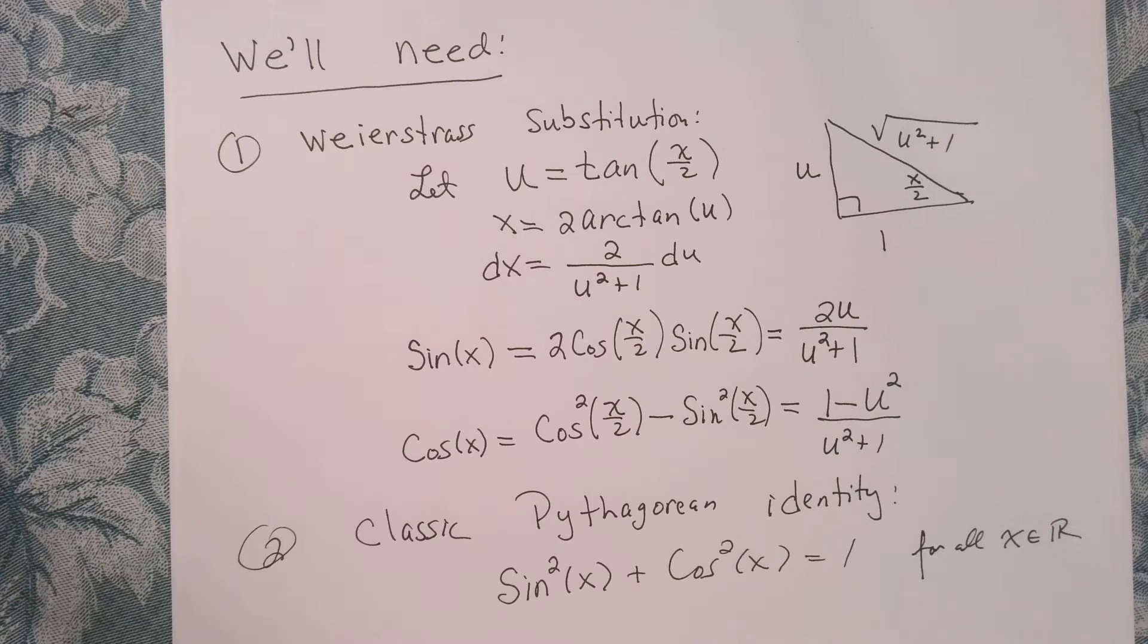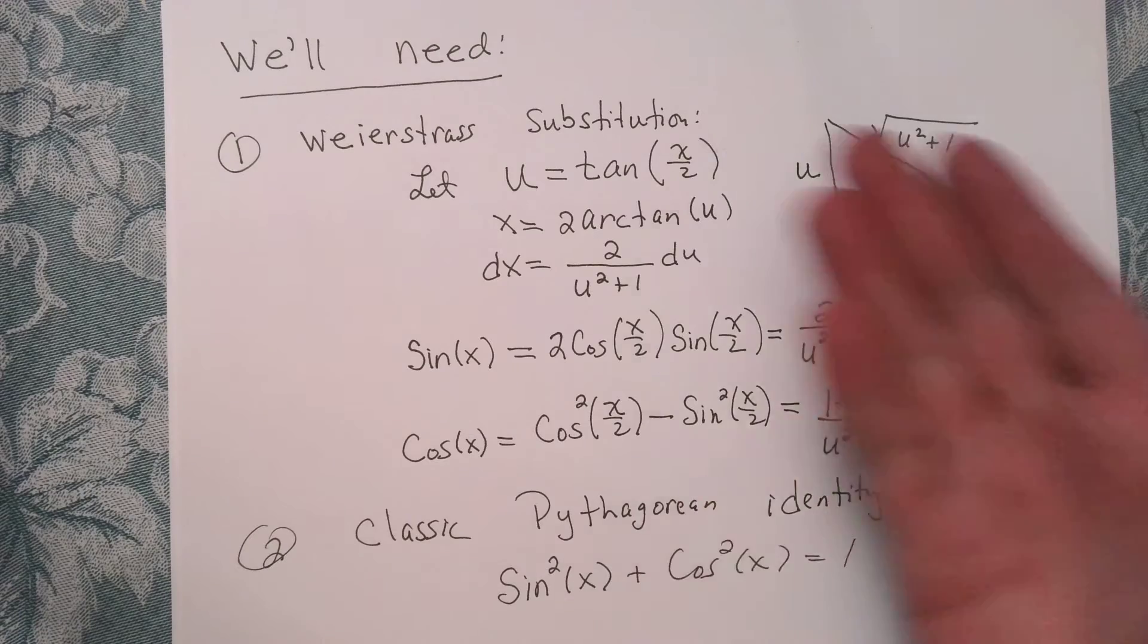And then lastly, we're going to need that classic Pythagorean identity. Okay, so I think with that said, let's check this out. And I think if you look at the Pythagorean identity, you have sort of an idea how we're going to start this, right? We're going to call the integral of 1 exactly the integral of this, and then we can proceed using this.